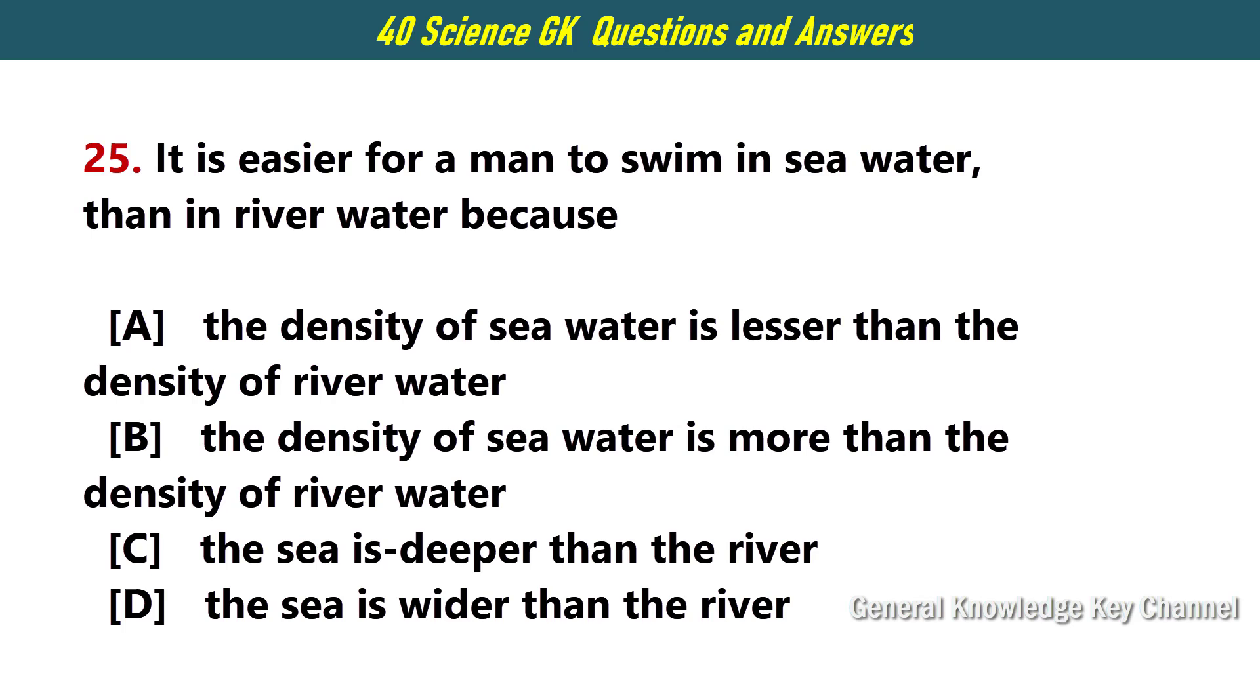It is easier for a man to swim in sea water than in river water because Answer B. The density of sea water is more than the density of river water.